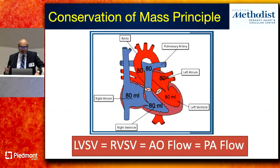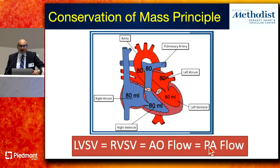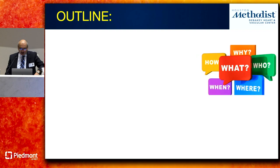When applying these basic principles, our primary goal is recognizing that there should be equal flow across all chambers of the heart. In a normal case, LV stroke volume, RV stroke volume, aortic flow, and PA flow should all match. If there's a discordance where one structure shows higher flow, that's your indicator of valvular regurgitation, and you can then quantitate its severity.